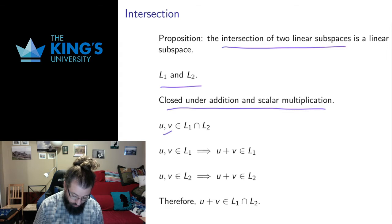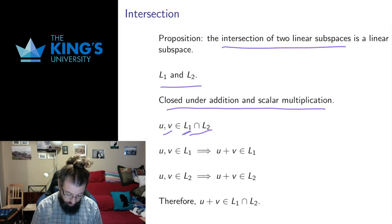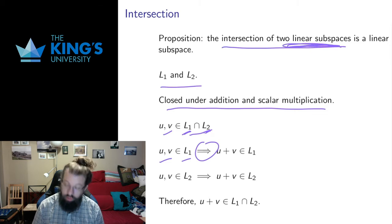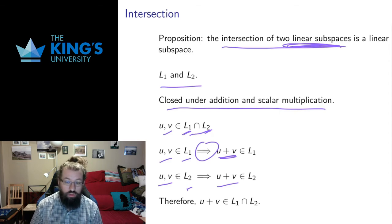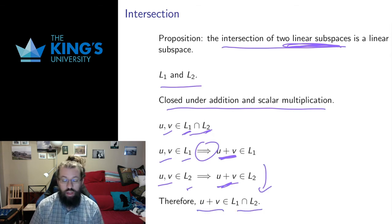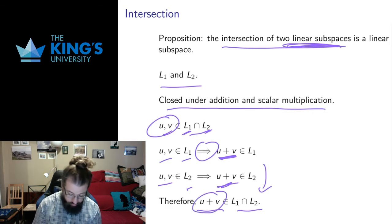Let's do the first one. I assume I have two things U and V that are in the intersection. The intersection means things that are in both subspaces, so this implies U is in L1, V is in L1, U is in L2, and V is in L2. Since U and V are in L1 and L1 is a linear subspace, their sum U+V is also in L1. The same is true for L2: U and V are both in L2, and L2 is a linear subspace, so the sum is in L2. Now the sum is in both L1 and L2, which by definition means it's in the intersection. So the intersection is closed under addition.